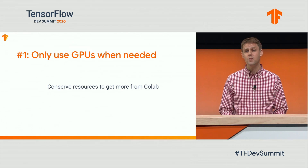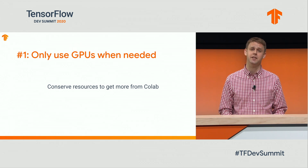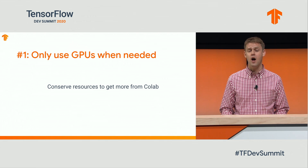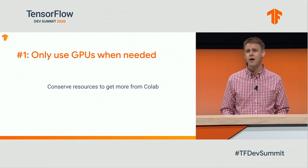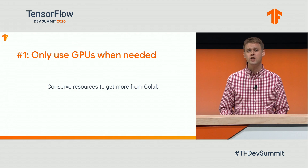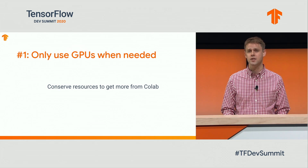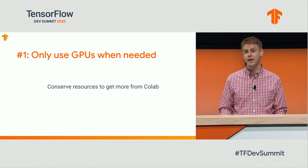Finally, the number one trick: only use GPUs when they're actually needed for your work. Of course, when using TensorFlow, often GPUs are needed. But when you're doing work that doesn't require a GPU, just use a default runtime that only has a CPU. Conserving resources helps you get the most out of CoLab by avoiding later running into the resource limits of CoLab.